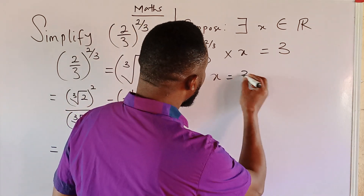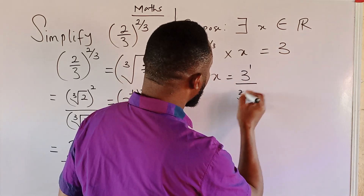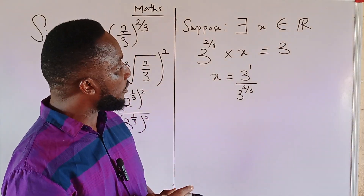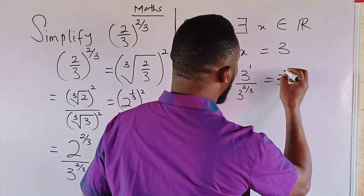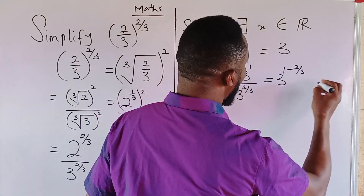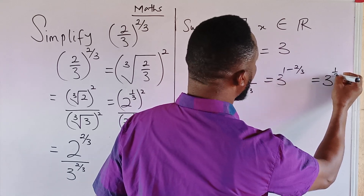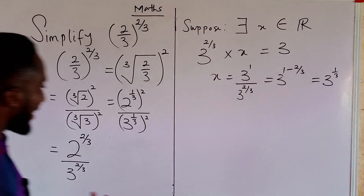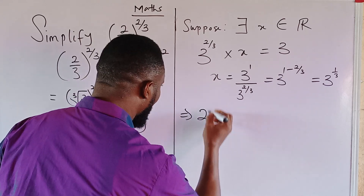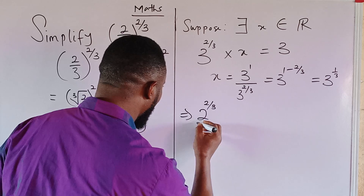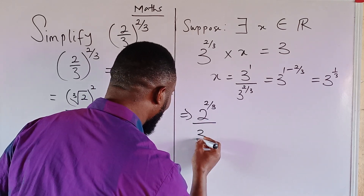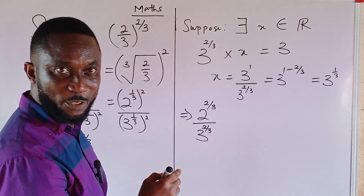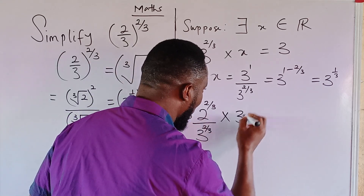By multiplying 3^(2/3) by x to get 3, our rationalization factor is x = 3^1 divided by 3^(2/3). Using the division rule of exponents, this is 3^(1 − 2/3), which equals 3^(1/3). So the rationalization factor is 3^(1/3).